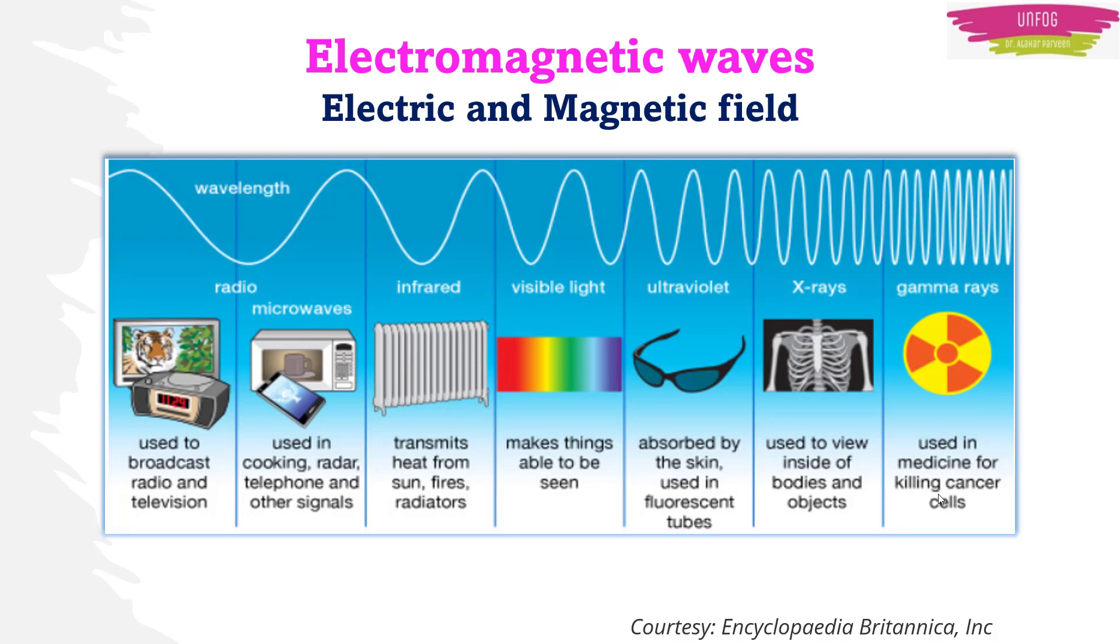Radio waves, infrared rays, visible light, ultraviolet rays, x-rays and gamma rays are all types of electromagnetic radiation. Radio waves have the longest wavelength and gamma rays have the shortest wavelength. And the most important of these is visible light which enables us to see.